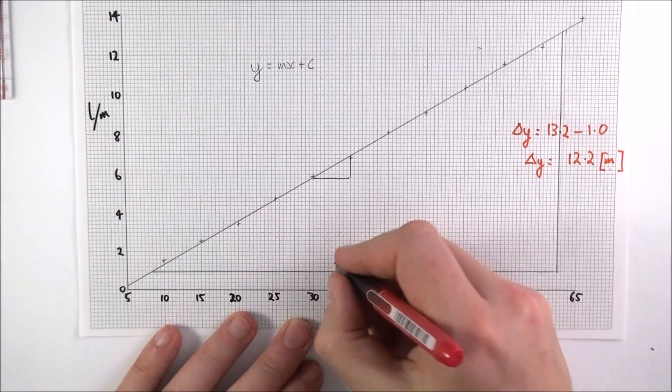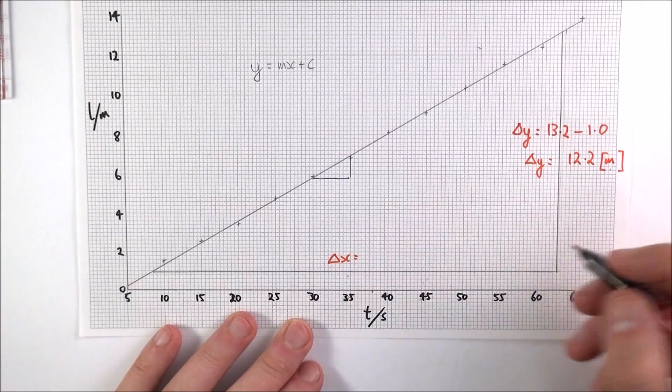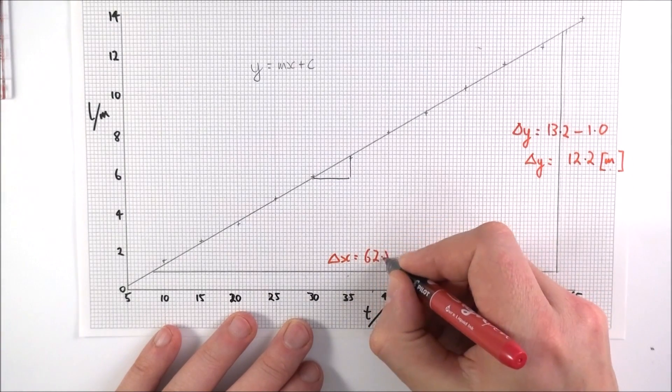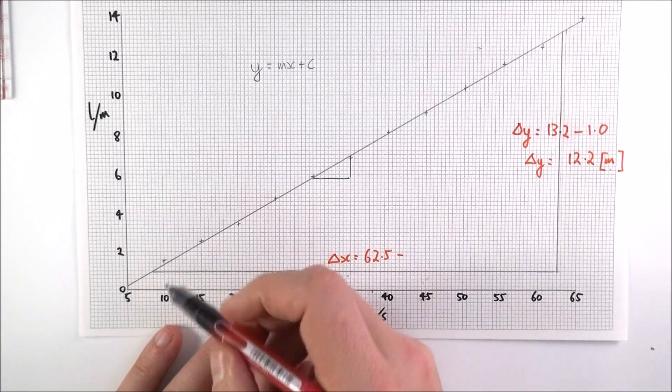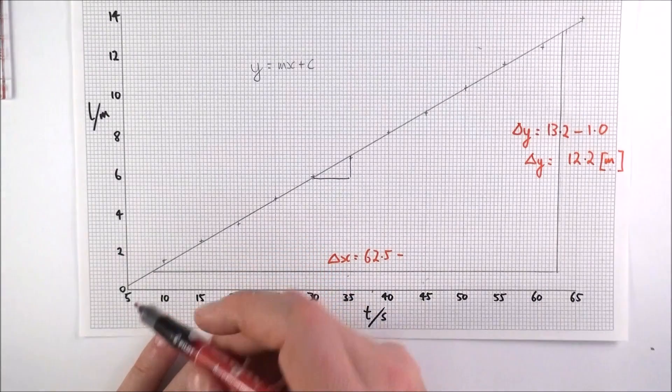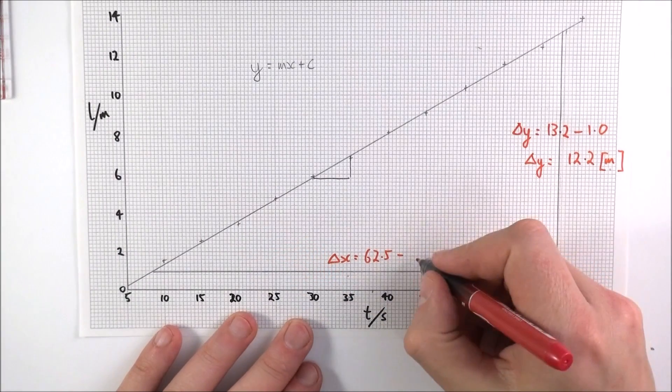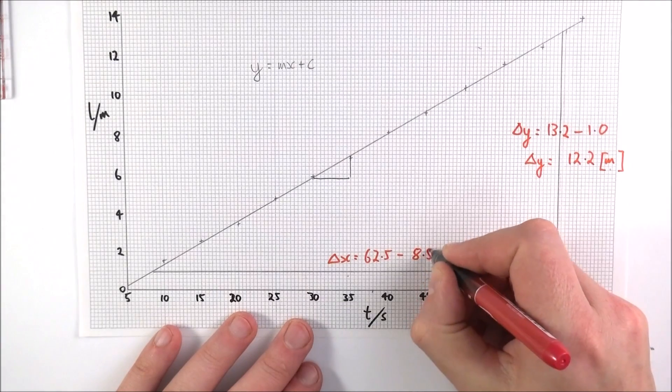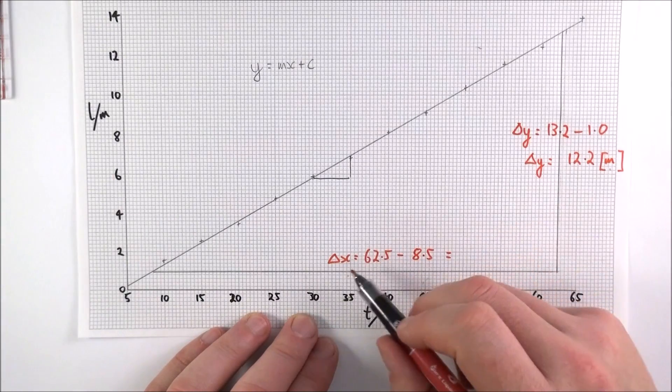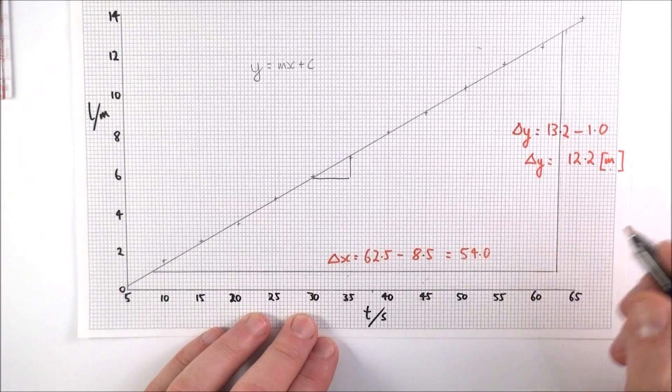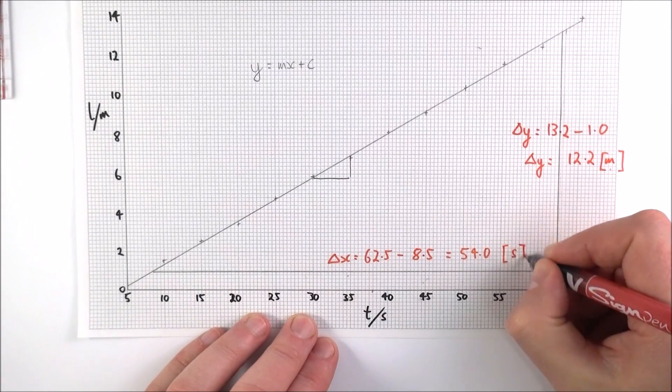If we look at the change in x value, the change in x value is going to be equal to this value up here which is 62.5 minus this value down here, which is the value of 8.5. This means my change in x value is equal to 54.0 and again the units for that are seconds.